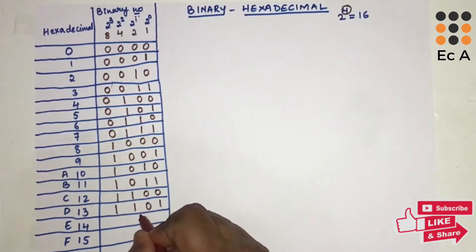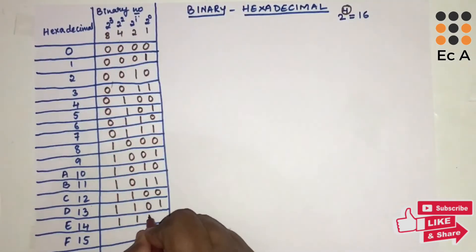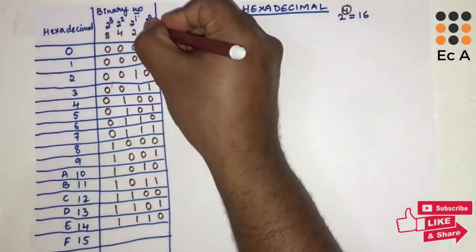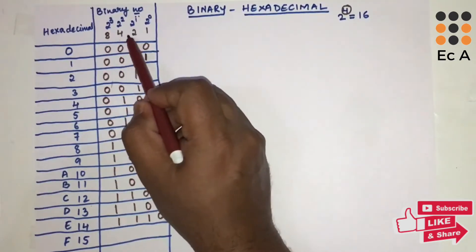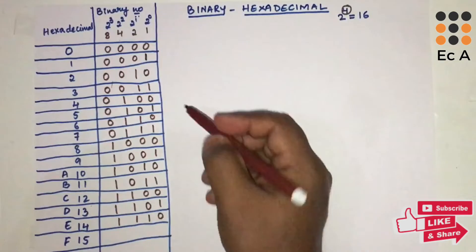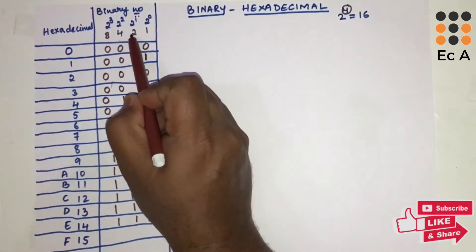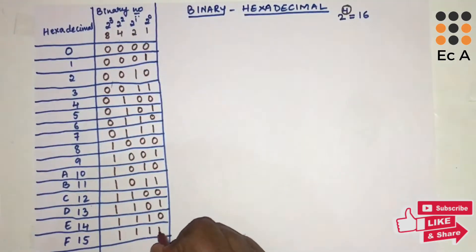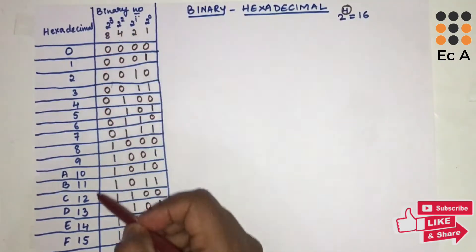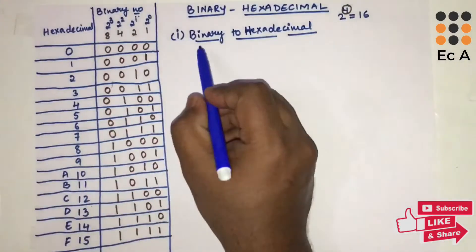To get 14 (E), three bits are 1: 8+4+2=14. To get 15 (F), all four bits are 1: 8+4+2+1=15. This completes the binary equivalent table for all hexadecimal digits. Now we will look at binary to hexadecimal conversion.